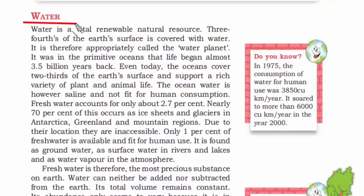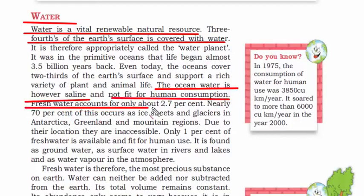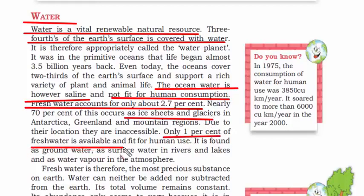Water is a renewable natural resource. Three-fourths of the earth's surface is covered with water, but ocean water is saline — salty — and not fit for human consumption. Therefore, only 2.7% of water is fresh and drinkable. Fresh water comes either through rain or from melting ice sheets and glaciers, and of all that, only 1% of fresh water is available and fit for human use.